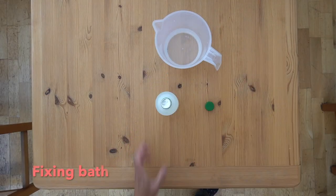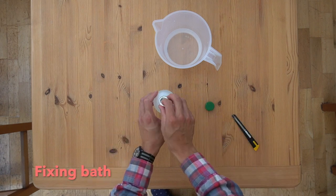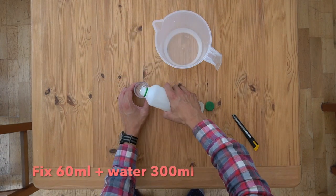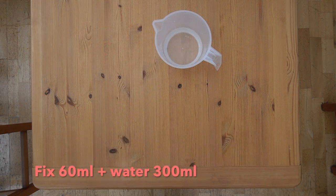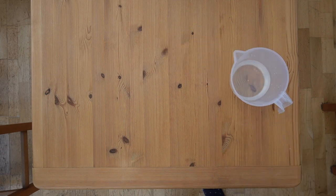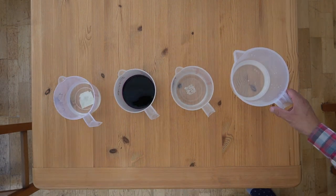Finally we're going to mix the fixing bath. This is a larger bottle and we'll need 60 milliliters of the fix followed by 300 milliliters of water. With the chemicals prepared, we are now ready to start developing.